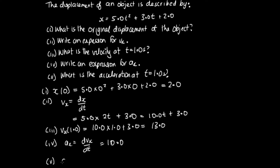Part 5: we need to find the acceleration at t = 1 second. When we substitute t = 1, there's no t in our expression, so we just get 10. This represents an object moving with constant acceleration of 10 meters per second squared in SI units.